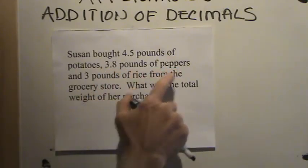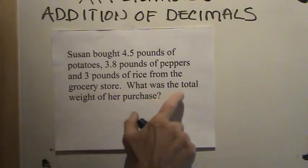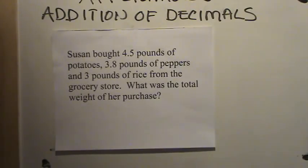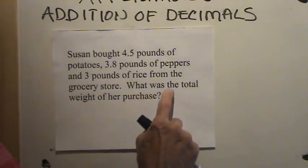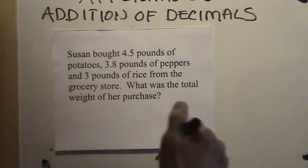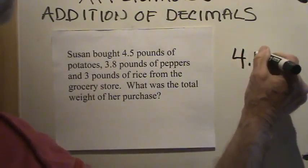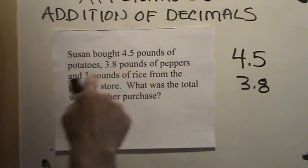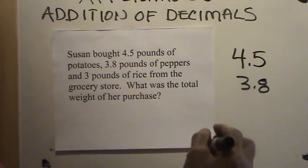At the last census, there were 9 and 4-tenths million people in Madrid, Spain. There were 3 and 3-tenths million people living in the suburbs outside of Madrid. What was the combined population of Madrid and its suburbs? In the city itself there were 9 and 4-tenths million, and in the suburbs 3 and 3-tenths million. So we simply add: 4 and 3 is 7, and 9 and 3 is 12. The combined population was 12 and 7-tenths million people.